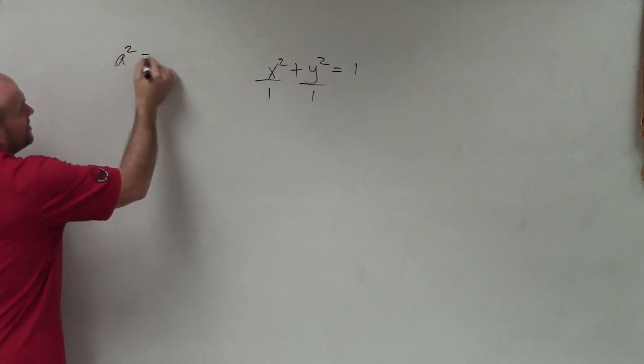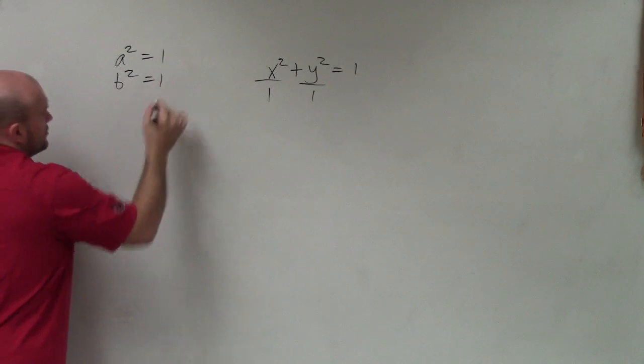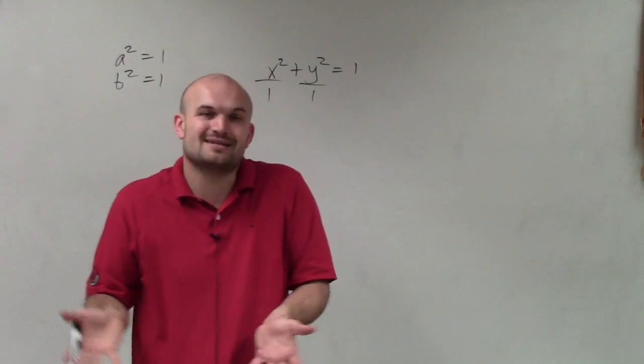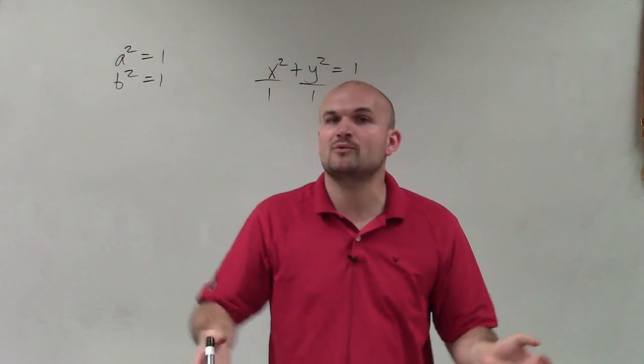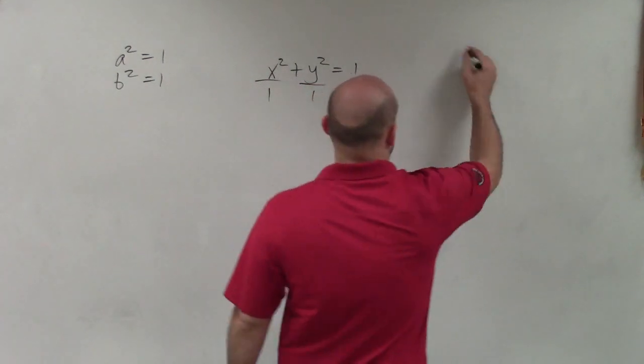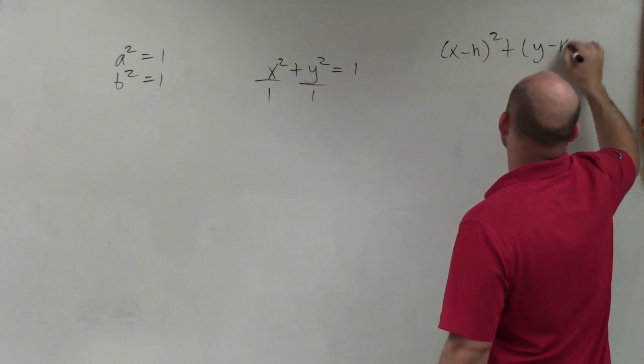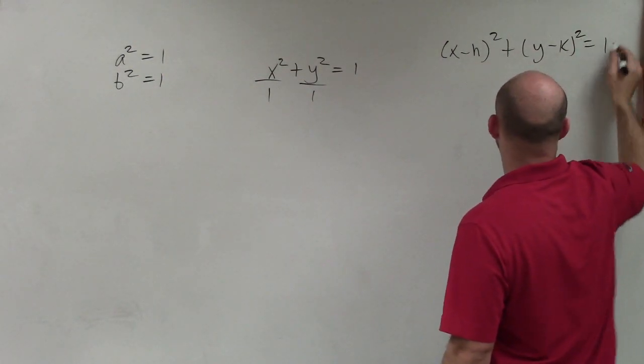However, since I know that a squared is equal to 1 and b squared is equal to 1, I'm not going to have a major axis, horizontal or vertical. And the major axis is going to be equal to the minor axis. Therefore, we have a circle where the general form of circle is x minus h squared plus y minus k squared equals r squared.